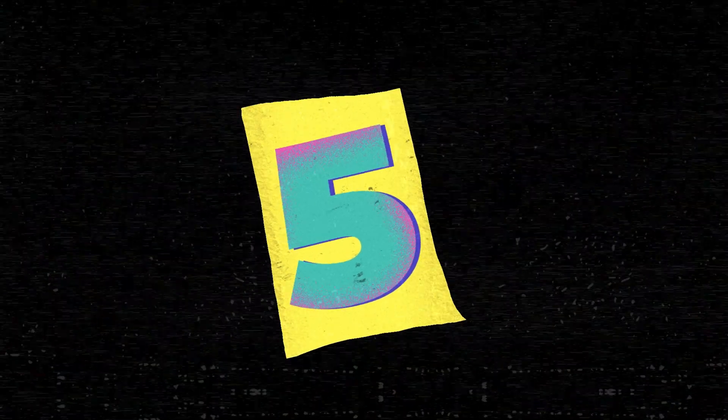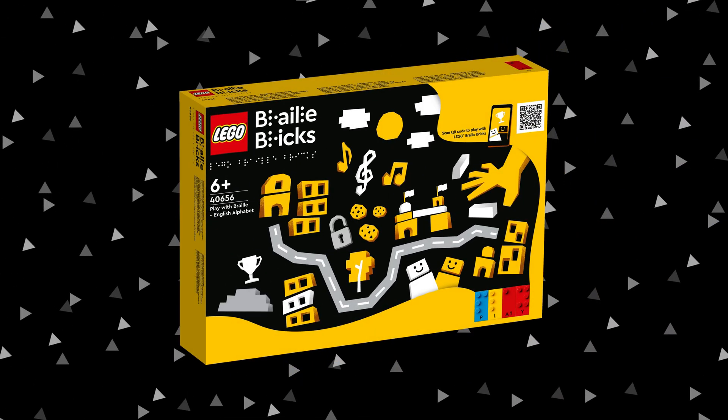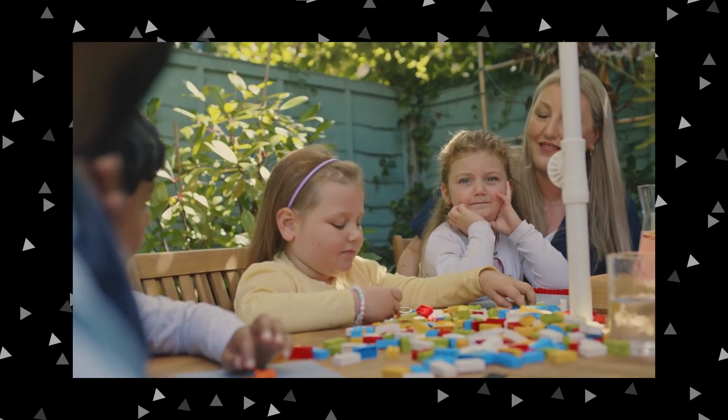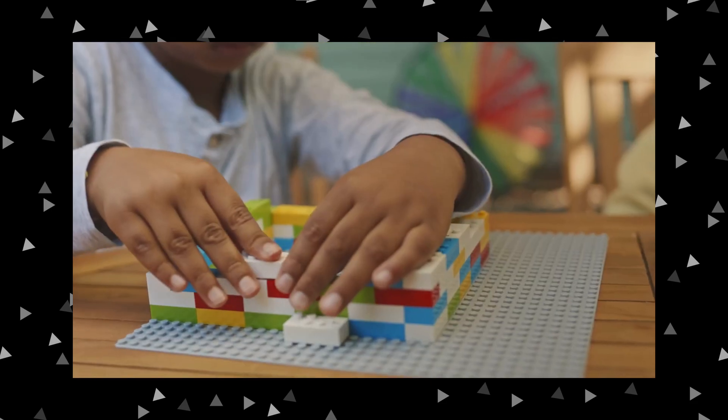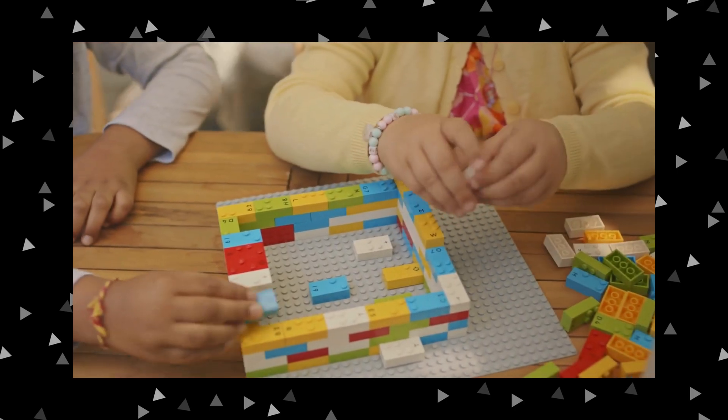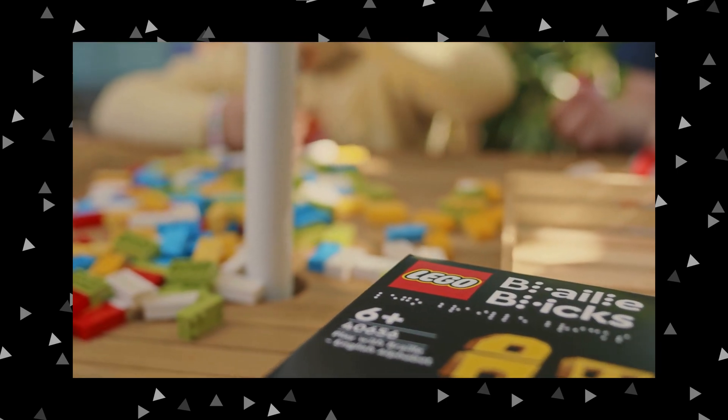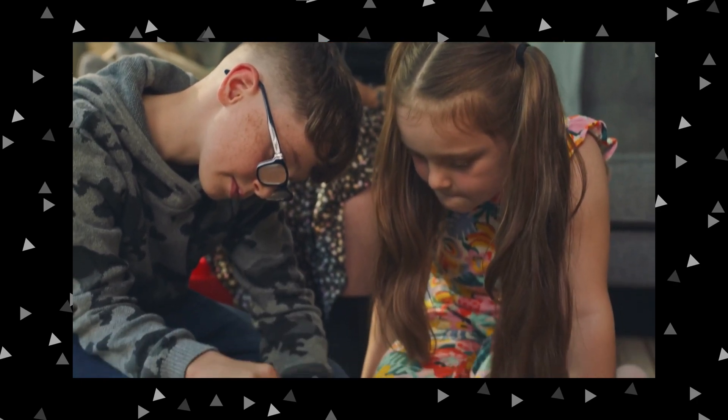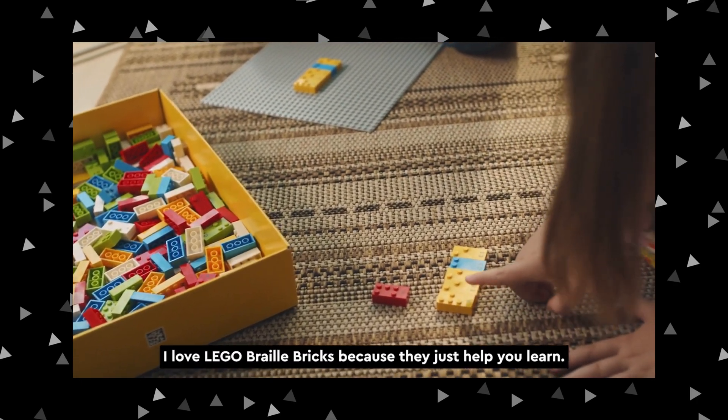The next is Lego Braille Bricks. It is a fun and innovative way for children with visual impairments to learn braille through play. Each brick is molded with studs that correspond to numbers and letters in the braille alphabet, with a printed version of the symbol or letter located below the studs. This allows sighted and blind children to play and learn together on equal terms.